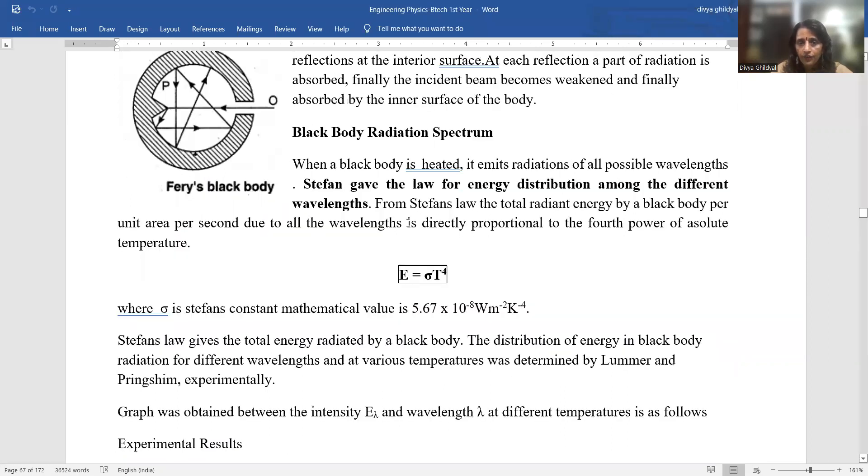Now, Stefan's Law gives you the law for energy distribution among different wavelengths. According to Stefan's Law, the total radiant energy emitted by a Black Body is proportional to the fourth power of absolute temperature. When we remove this proportionality sign, we introduce a constant known as Stefan's Constant. The mathematical value is 5.67 × 10^-8 W/m²K^-4. Stefan's Law gave the total energy radiated by a Black Body.